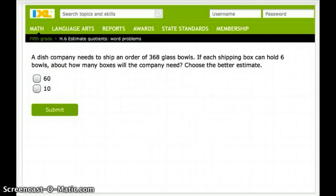Okay. You guys go ahead and practice this one. So a dish company needs to ship an order of 368 glass bowls. Each shipping box can hold 6 bowls. About how many boxes will the company need? Be sure to do your UPS check. So have that information that's important written down. And then, of course, your correct answer.